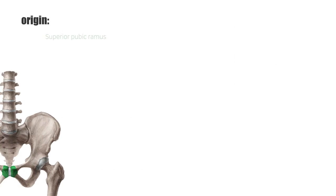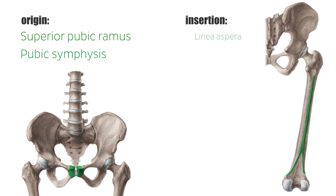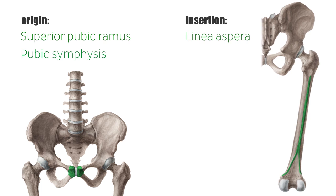The adductor longus muscle has its origin at the superior pubic ramus and the pubic symphysis, and its insertion at the linea aspera. Distally, it forms an aponeurosis extending to the vastus medialis muscle, also called the vastoadductorial membrane.